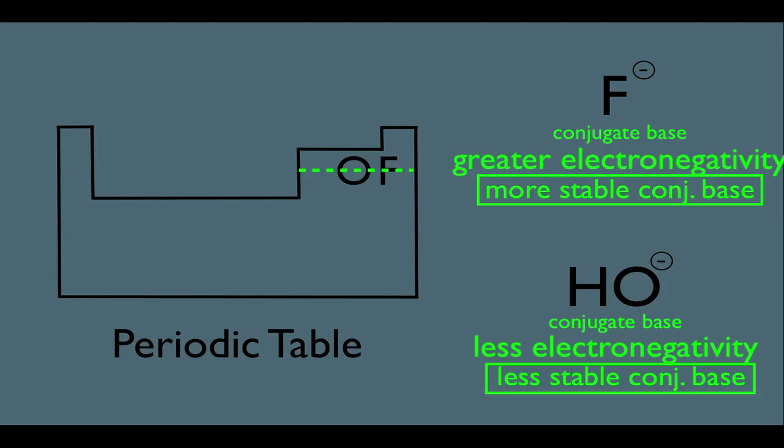However, let's place I on our periodic table of elements. Notice it's located much further down on the chart, which means it's much bigger.